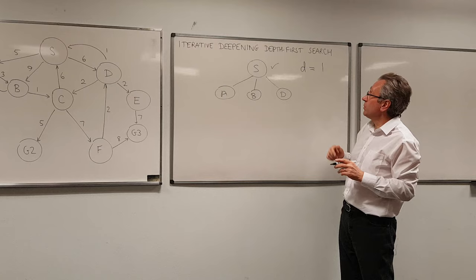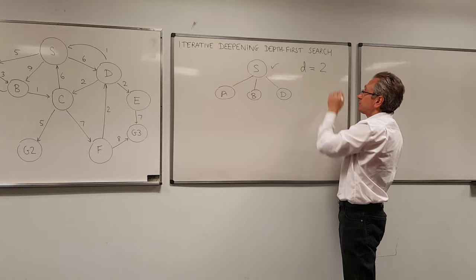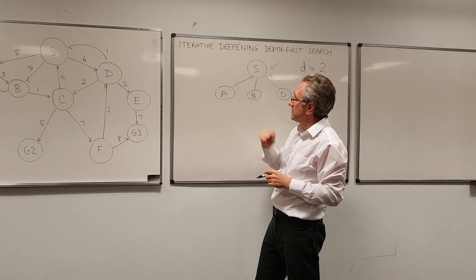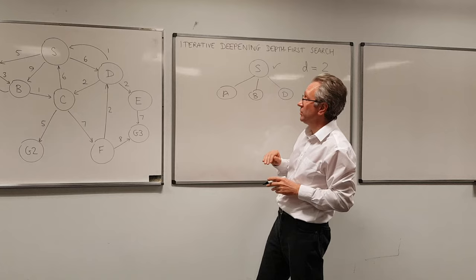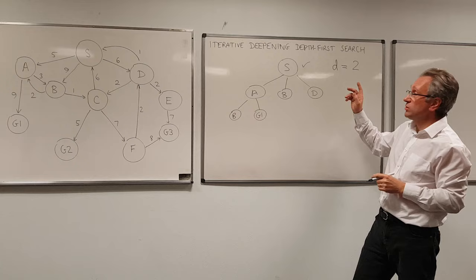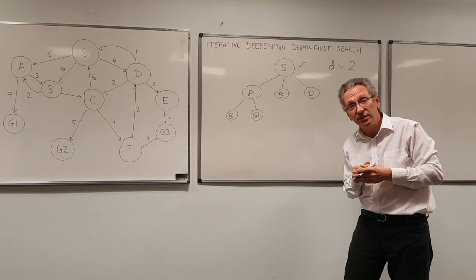So what we now do is we increase the depth to 2. I'll use the previous tree. So we expand it to form A, B and D. But this time because the depth limit is 2, when I look at state A, I say, where can I get to from A? Because I'm only at depth 1 here. So I can go to B and I can go to G1. And because we're doing iterative deepening, we don't even have to check for loops. It might make it slightly more efficient if we do check for loops, but we don't have to.